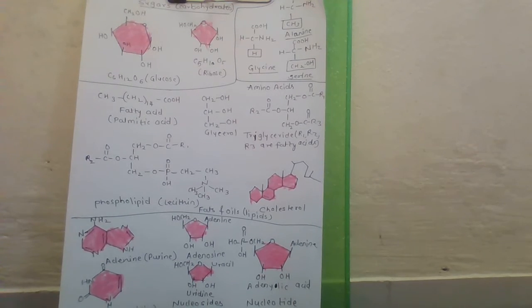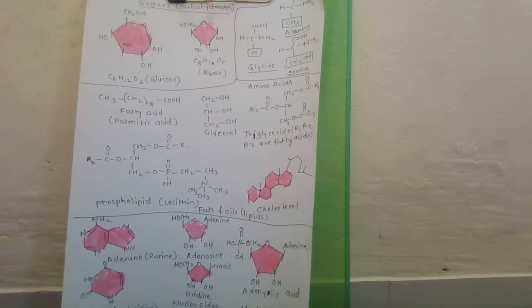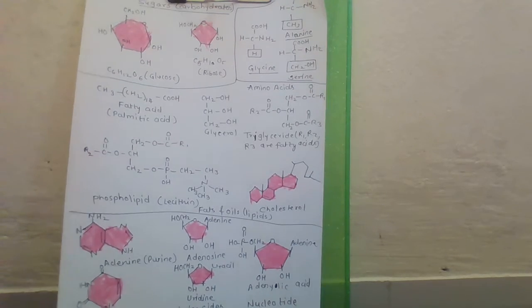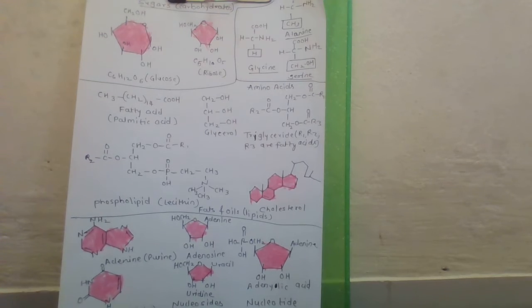A particular property of amino acid is ionizable nature of NH2 and COOH group. Hence, in solutions of different pH, the structure of amino acid changes.